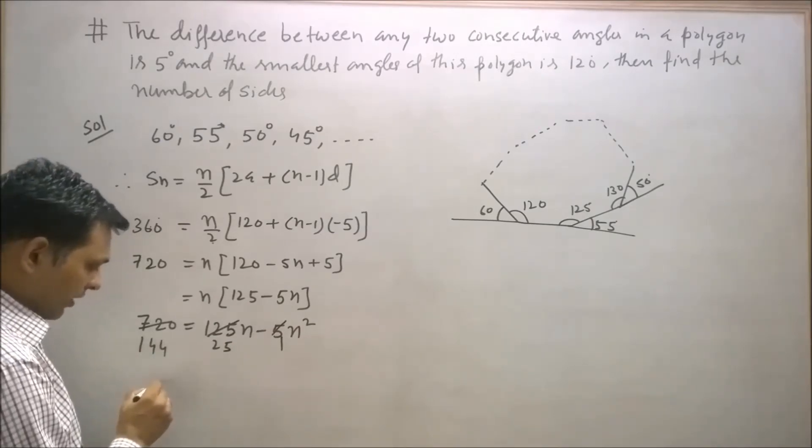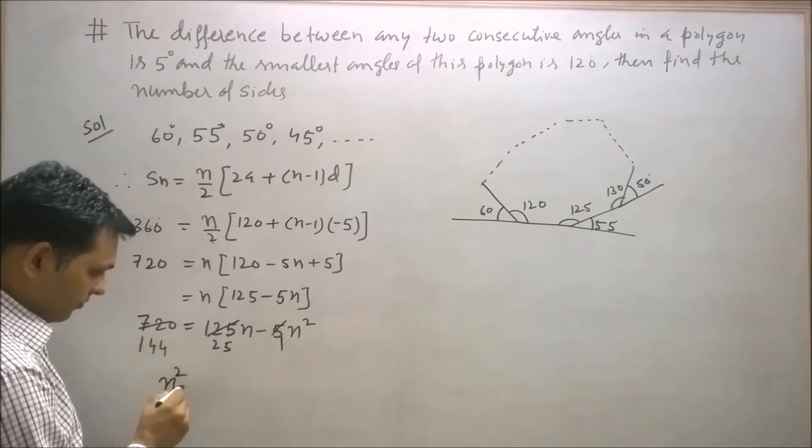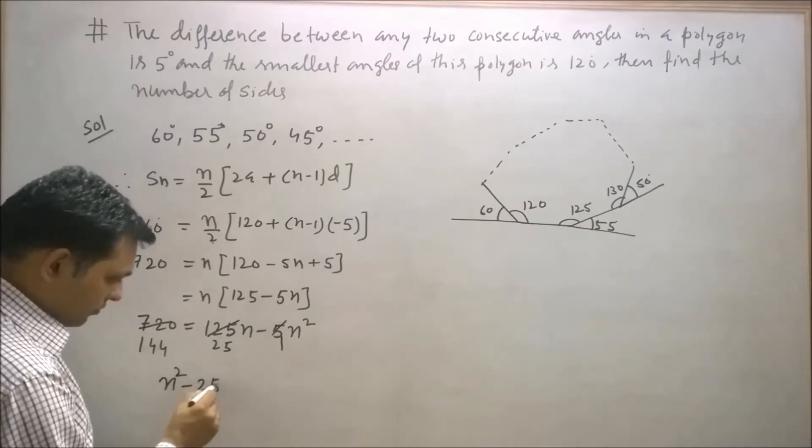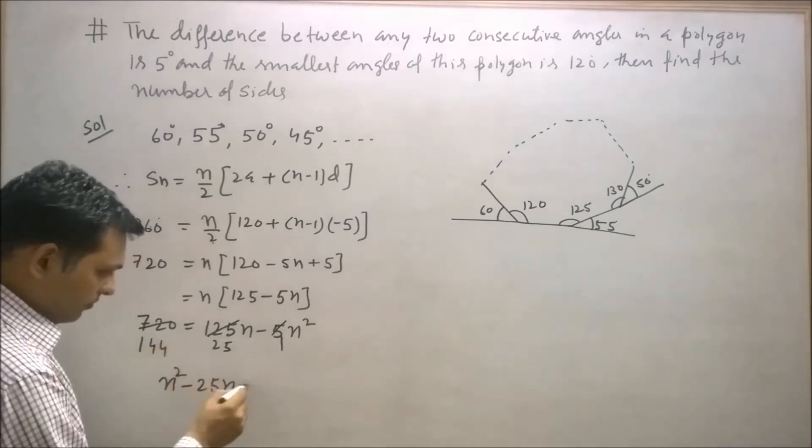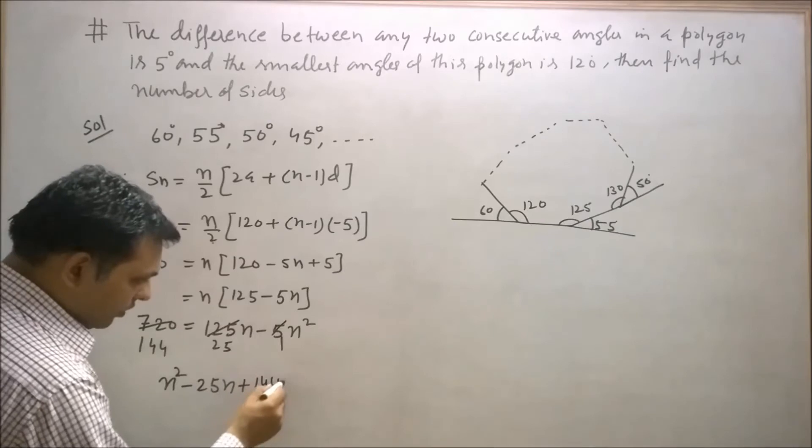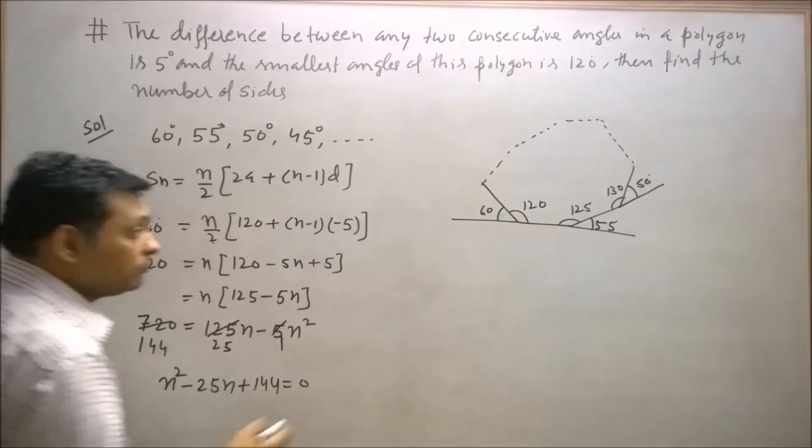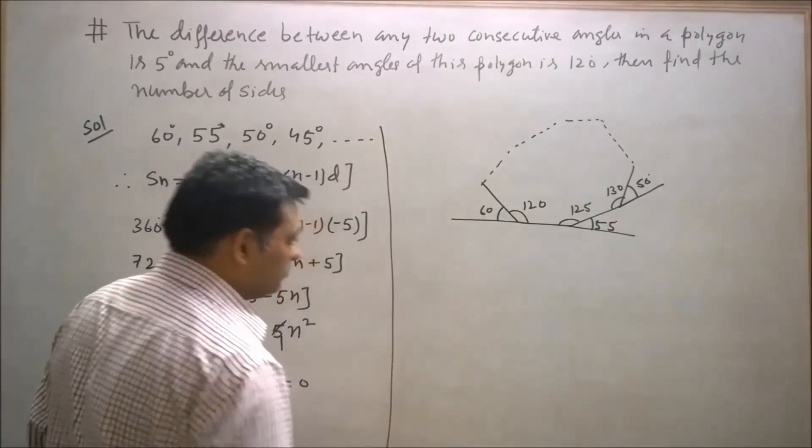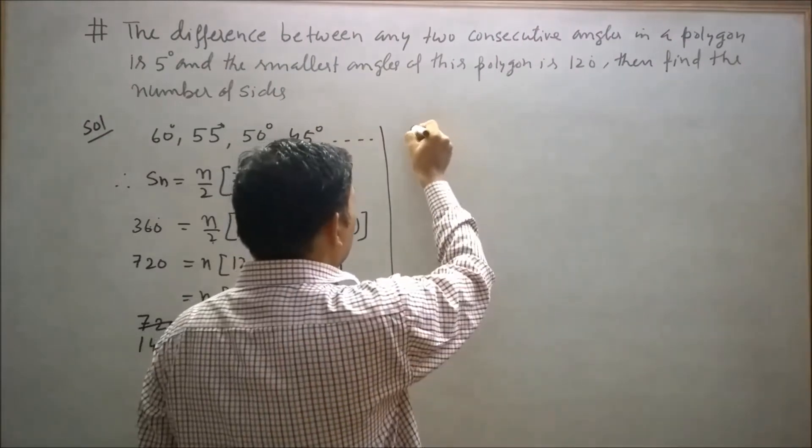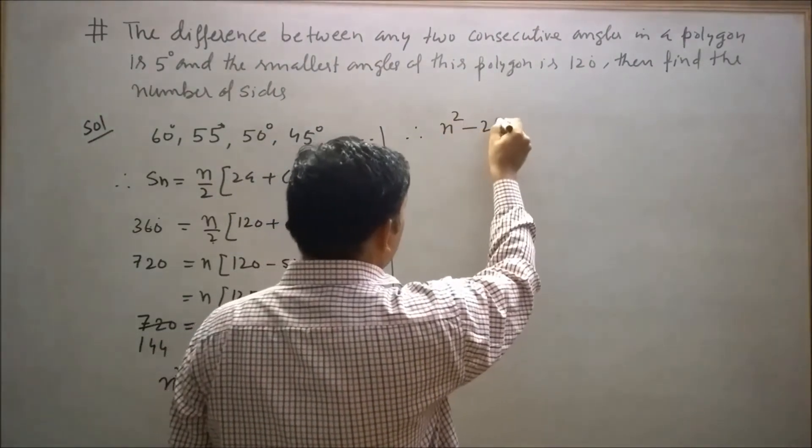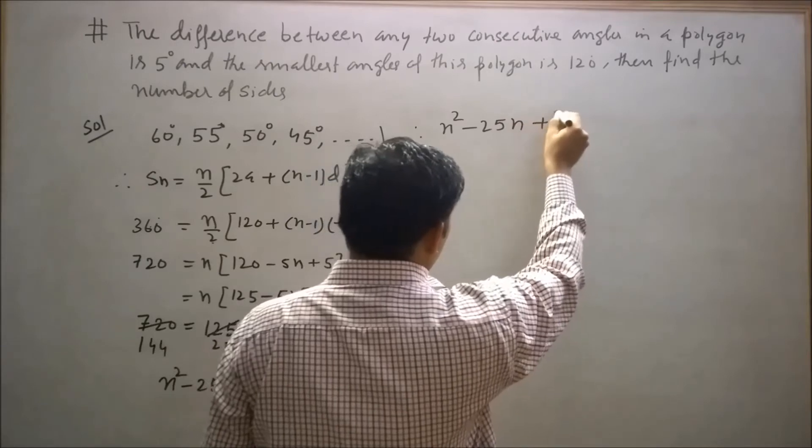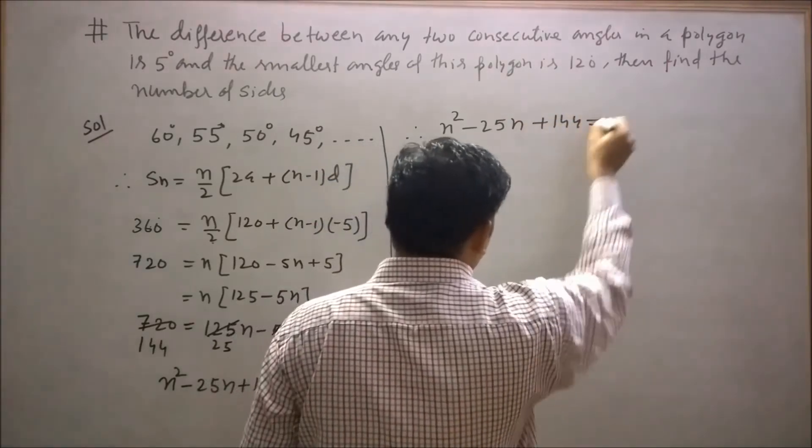Transposing all terms to the left-hand side, we get n² - 25n + 144 = 0.